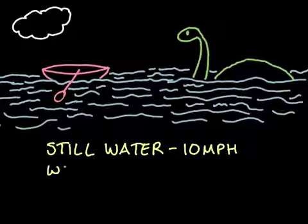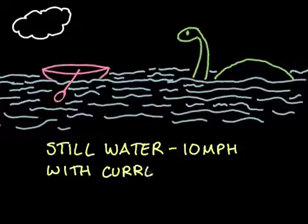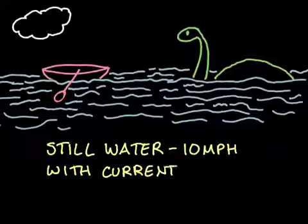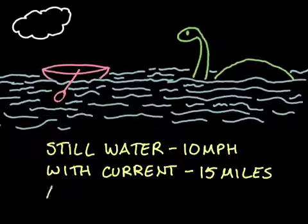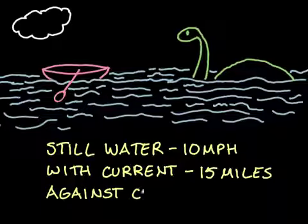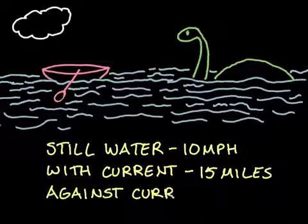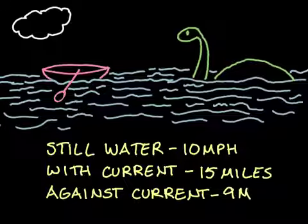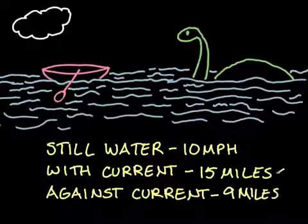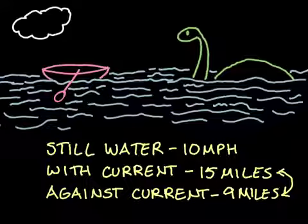With the current, his rate will be faster because the current is going to be pushing him along. Now he doesn't know the exact rate of the current, but he knows with the current he can travel 15 miles. In the same amount of time, it would take him to travel 9 miles against the current when it's pushing against him, slowing him down. So that was 9 miles. And remember, these take the same amount of time.